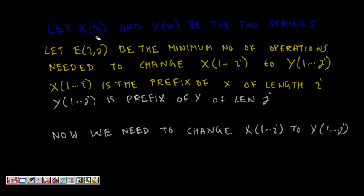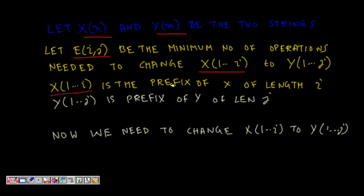We have string X of length N and string Y of length M, where Y is the destination string we want to convert X into. We will use a dynamic programming approach. We define E[i,j] as the minimum number of operations needed to change the prefix X[1..i] to the prefix Y[1..j]. What we ultimately need to find is E[N, M].